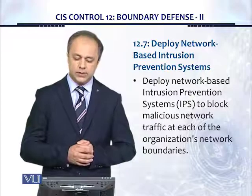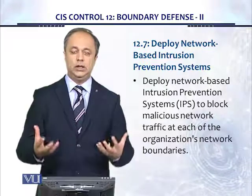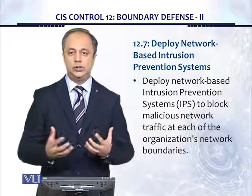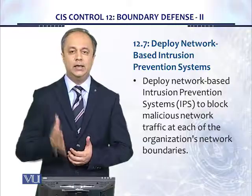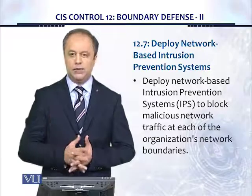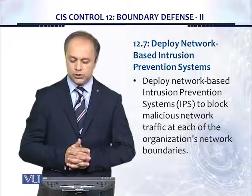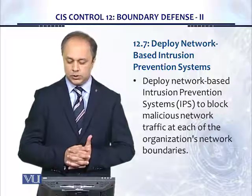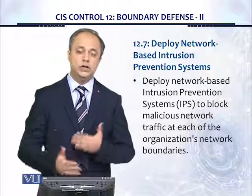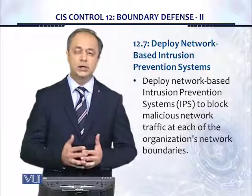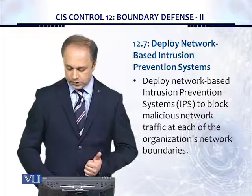Control 12.7 tells us to deploy network-based intrusion prevention systems. IPS usually sits in-line and will try to block malicious traffic in-line. Deploy network-based intrusion prevention systems to block malicious network traffic at each of the organization's network boundaries. This needs to be done in real time, so you need a next-generation firewall with IPS capability, for example.